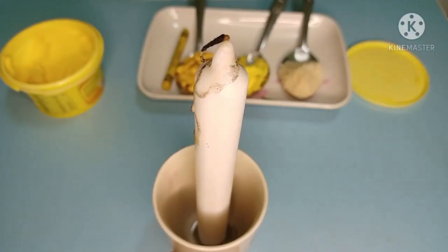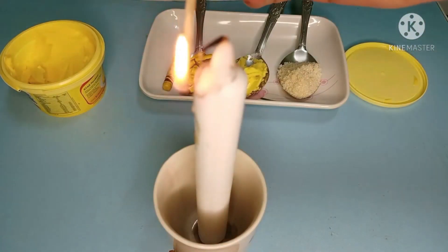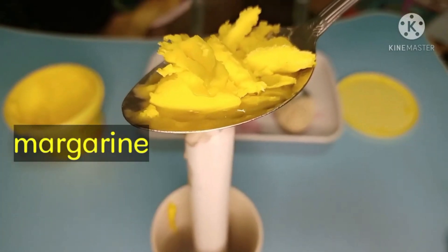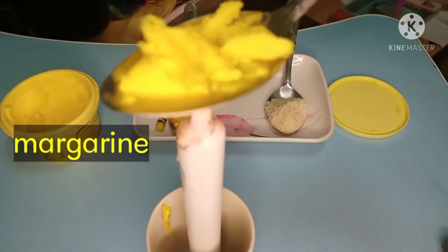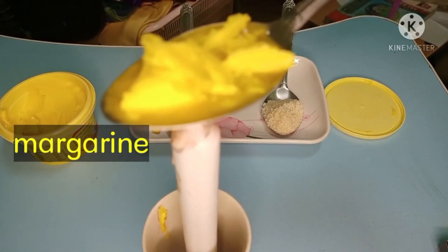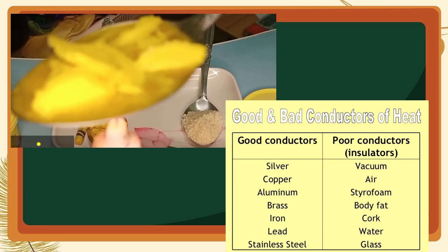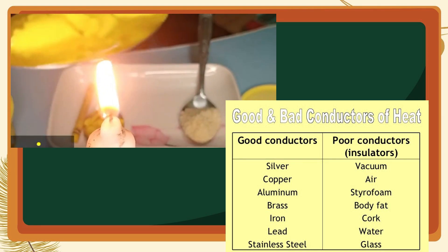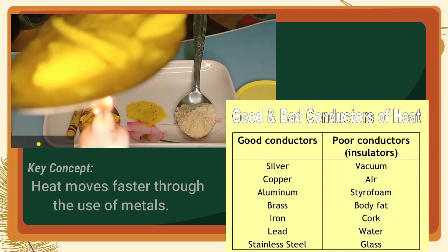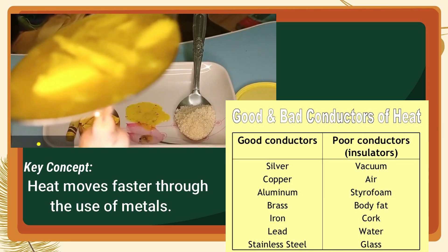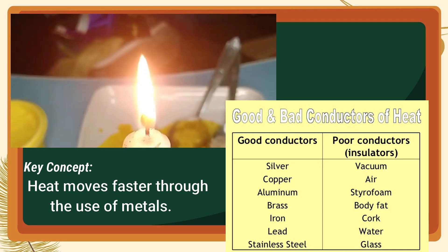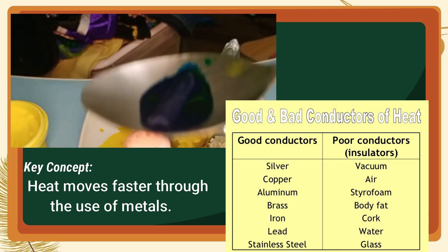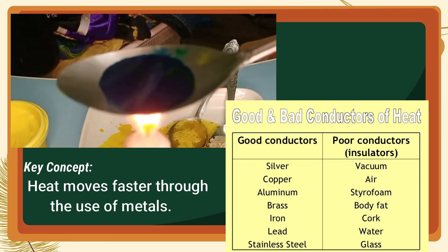First, light the candle with the matchstick. Put margarine on the spoon, then slowly bring the spoon to the flame of the candle. Observe the changes. Some solid materials conduct heat easily, such as the metal spoon that we are using in this experiment. Some good conductors of heat include metal, copper, aluminum, brass, steel, bronze, silver, and other metals. The molecules of metals are so compact that they allow heat energy to flow rapidly from molecule to molecule. As we have observed, the heat from the candle flame transfers rapidly to the metal spoon, causing the margarine and other materials to melt.